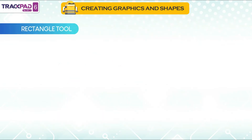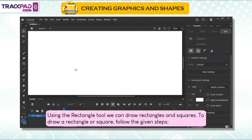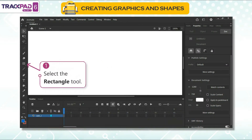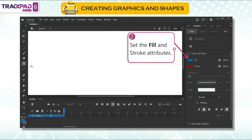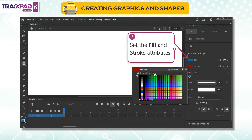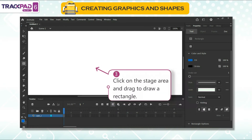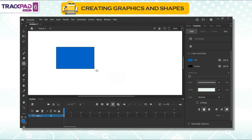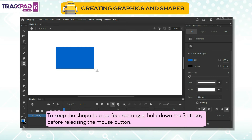Rectangle tool: using the rectangle tool, we can draw rectangles and squares. To draw a rectangle or square, follow the given steps. First, select the rectangle tool. Second, set the fill and stroke attributes. Third, click on the stage area and drag to draw a rectangle. To keep the shape to a perfect rectangle, hold down the shift key before releasing the mouse button.